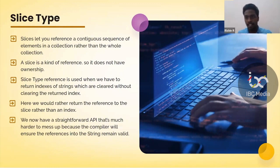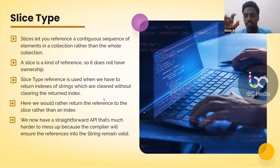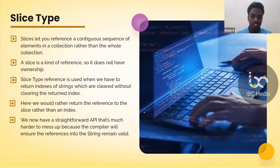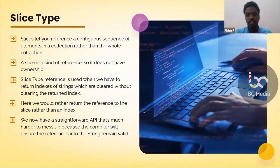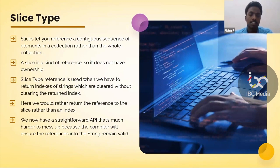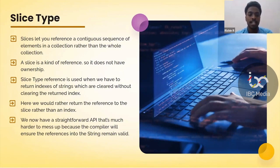Sometimes we need to access slices because we only want to consider a particular portion. If you solve problems like sliding window problems, you are actually using slices to pass through the entire content of a data structure. In Rust, a slice is a kind of reference, so it does not have ownership. The slice type reference is used when we want to return indices of strings that are cleared without clearing the returned index — we return the reference to the slice rather than an index.